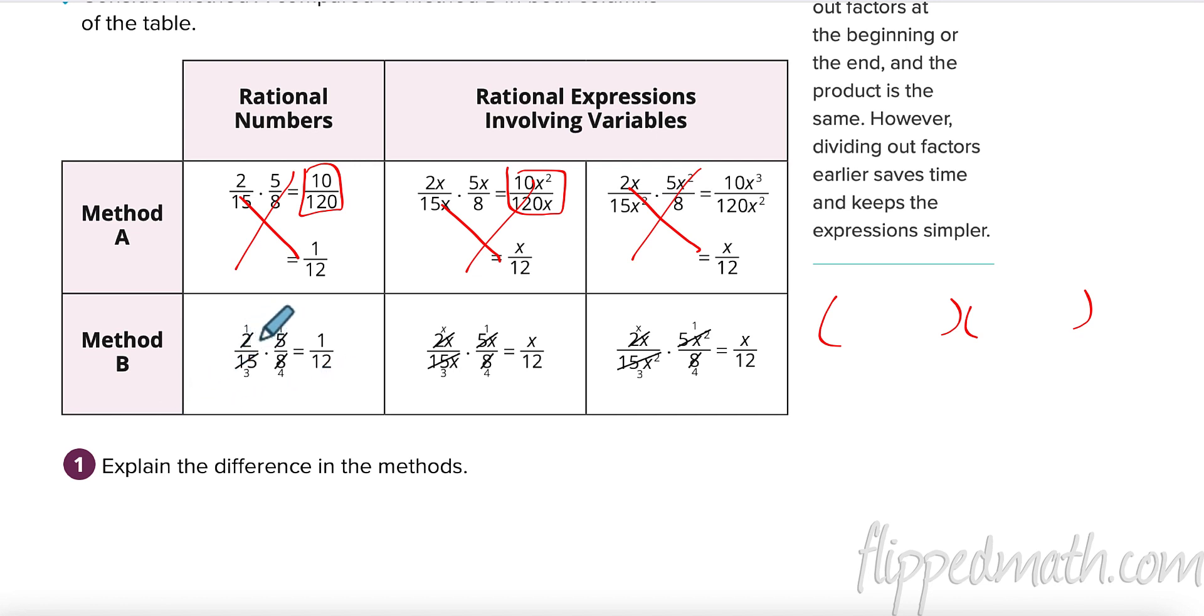What I do like is method B. And what they do in method B is they look for a common factor. So for example, this 2 goes into this 8 four times. So there's 1 here and there's a 4 here. There's always a 1. There's always something up top. This 5 goes into 15 three times. And then I can see it's just 1 times 1 is 1, 3 times 4 is 12. I think that works incredibly easier. The x's cancel, for example. Let's just do a couple. Let's get right into it. I like method B.